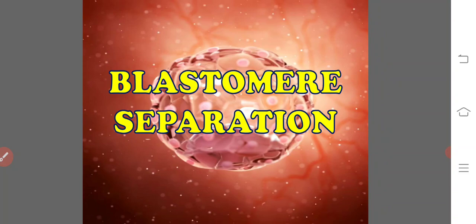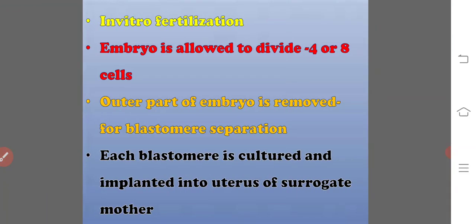Blastomere separation involves in vitro fertilization of an egg cell with a sperm. The resulting embryo divides until it forms a mass of about four to eight cells. The outer coating is removed and placed in a solution causing separation of blastomeres. Each blastomere is cultured to form an embryo with the same genetic constitution as the original. Each new embryo is then implanted into the uterus of a surrogate mother to develop.